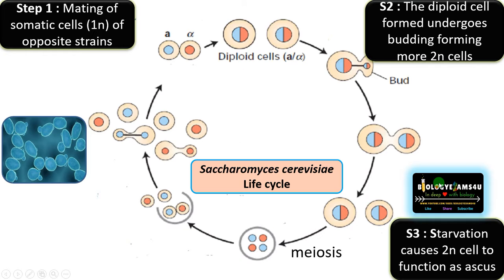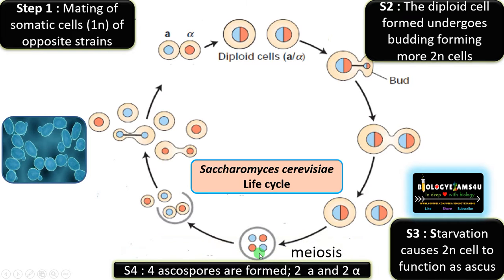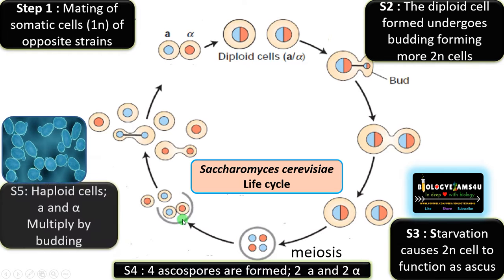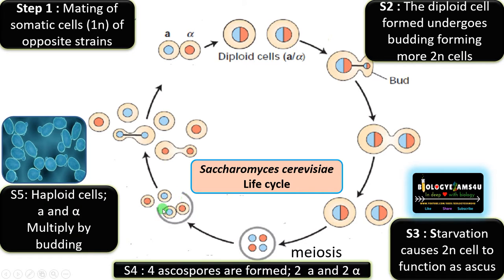When there is food scarcity or starvation, this diploid cell functions as an ascus. Inside the cell, the diploid nucleus undergoes meiosis, forming four ascospores — two of the A strain and two of the alpha strain — formed within this ascus. At maturity, the ascus wall breaks up.